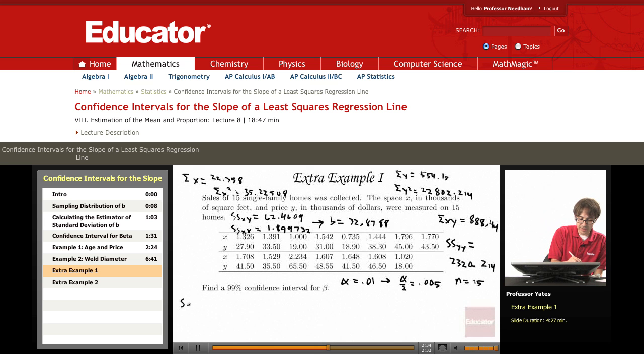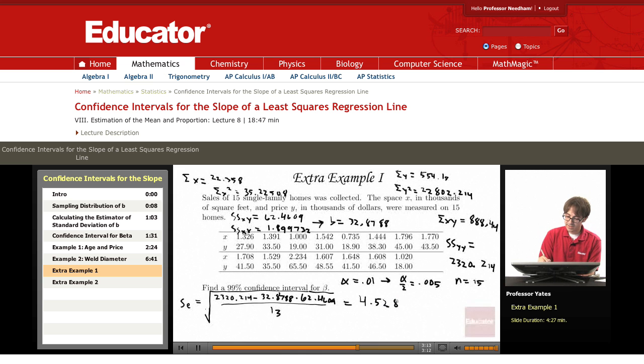After all that, we can calculate SE. So this is going to be the square root of 2320.214 minus 32.878, that's my b, and then we're multiplying that times my SSXY, by my 62.4609. I'm dividing this by N minus 2, which is 13. So we get for SE, approximately 4.5283.